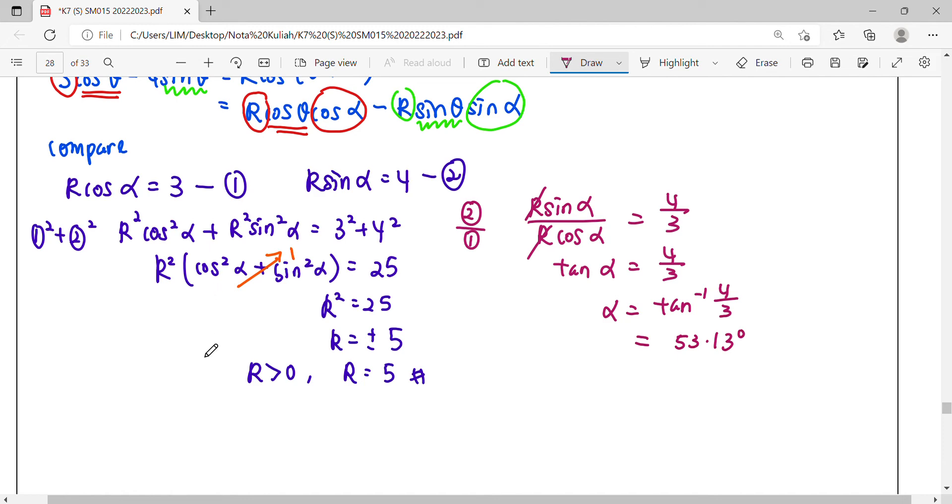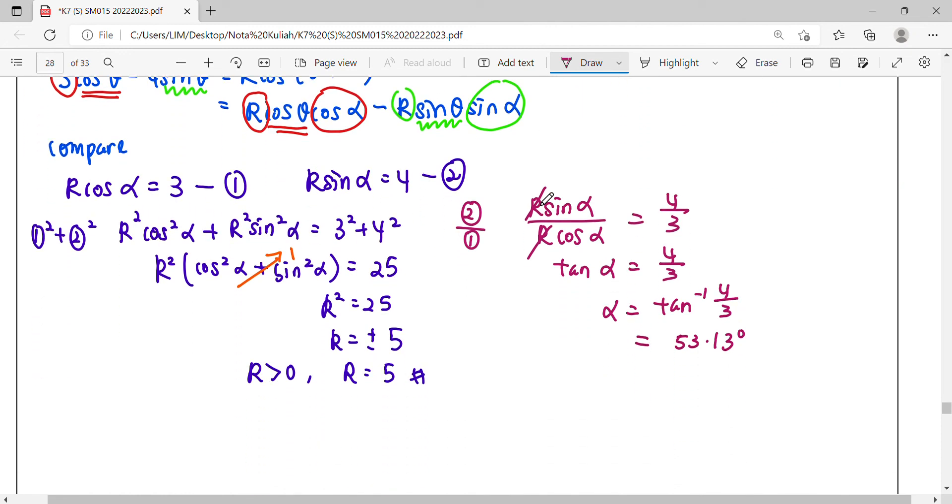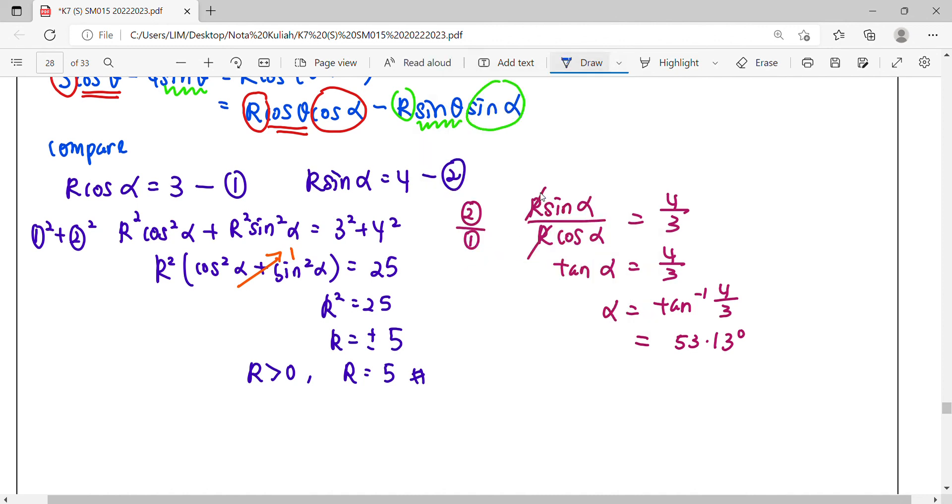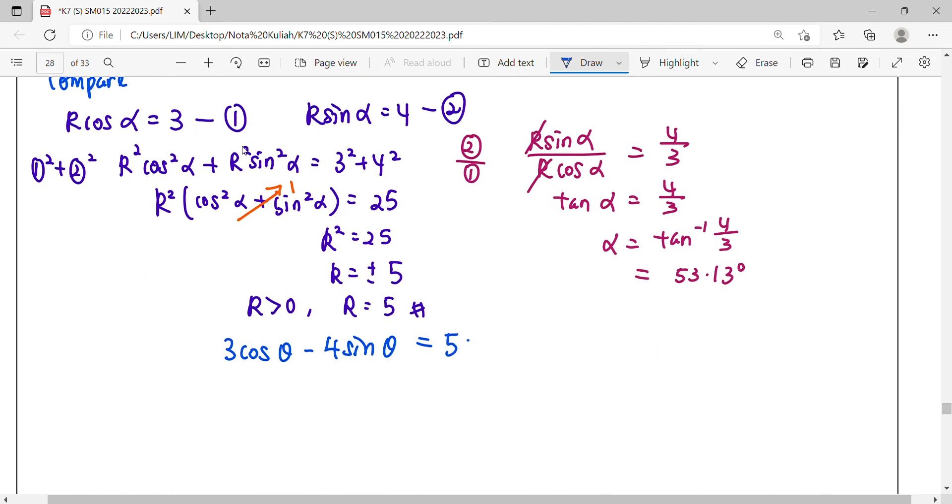We're done. We managed to express this single cosθ and single sinθ in terms of compound angle. Lastly, we rewrite the expression where 3cosθ - 4sinθ equals, substituting our R value of 5 and our α which is 53.13°.